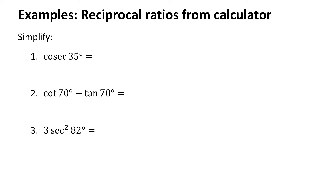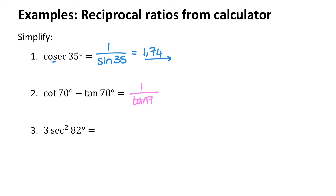Working out reciprocal ratios on the calculator is super easy. The only thing is that there is no cosec button, cot button, or sec button on your calculator — so you just use the reciprocal. Cosec is the reciprocal with sine. If I type 1 divided by sine of 35 into my calculator, I get 1.74 rounded to two decimal places. Or for cot of 70 minus tan of 70, that's 1 divided by tan of 70 minus tan of 70, which equals negative 2.38.